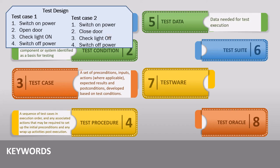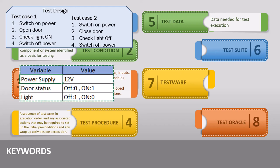The next keyword is test data, defined as data needed for test execution. This term is used during automation testing — while executing the test case we need test data, which we provide as input to the test cases. For example, in the test case we say switch on the power supply, but we didn't mention how much voltage should be provided. This data we will get from test data. All other values are stored similarly. This data can be stored in Excel form or any testing-specific tools.